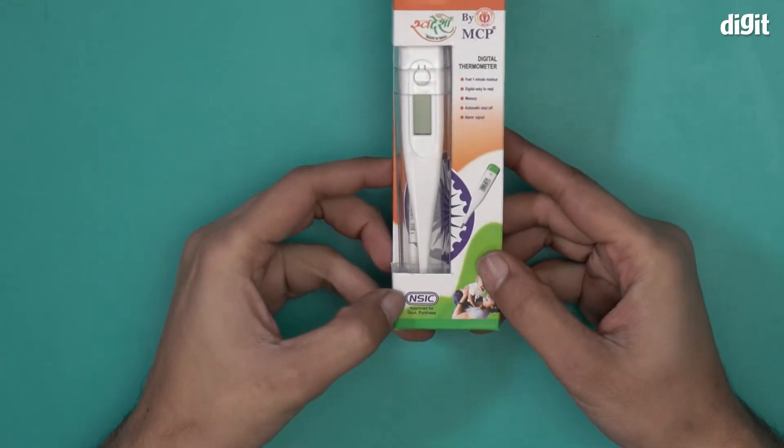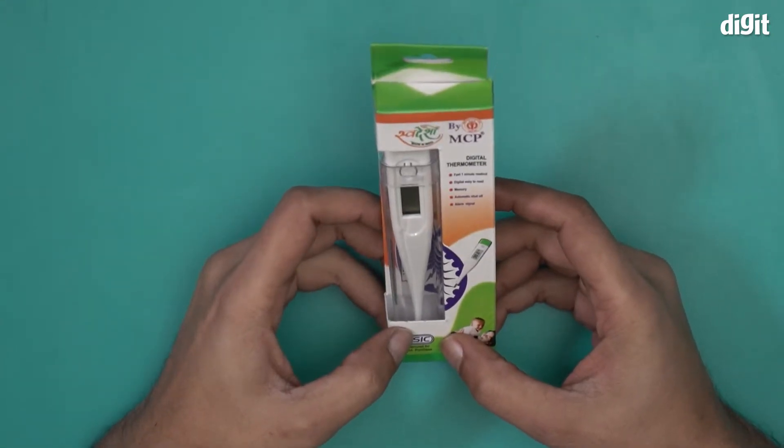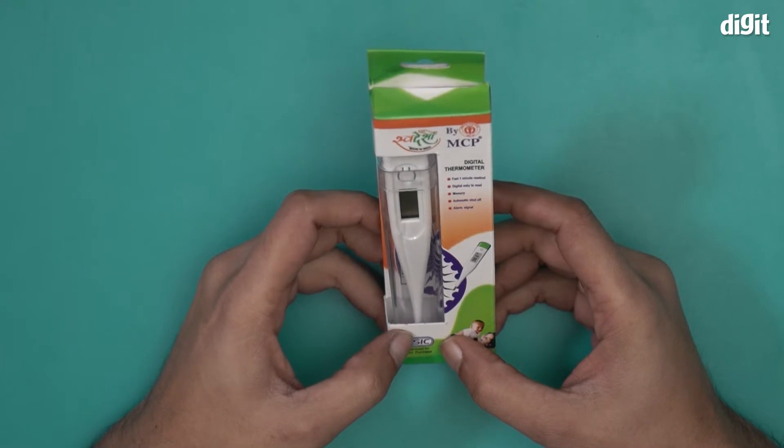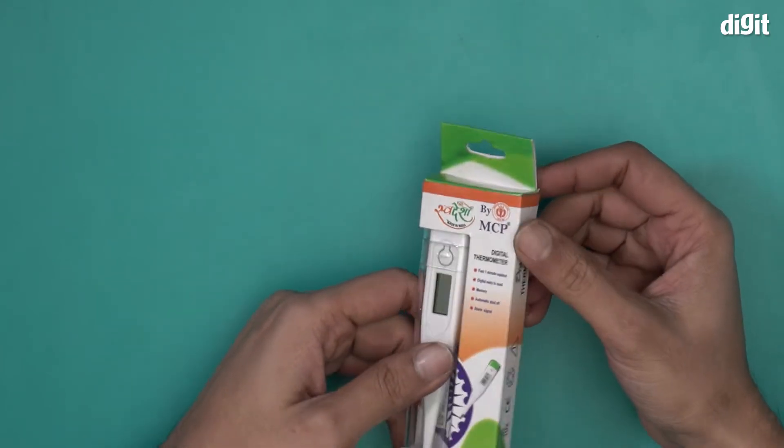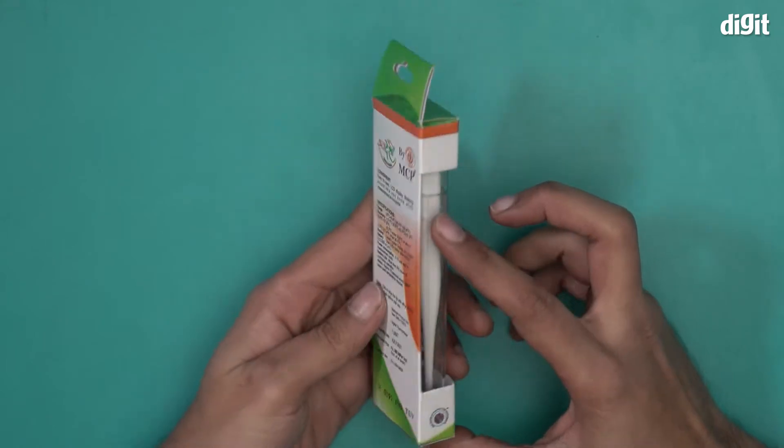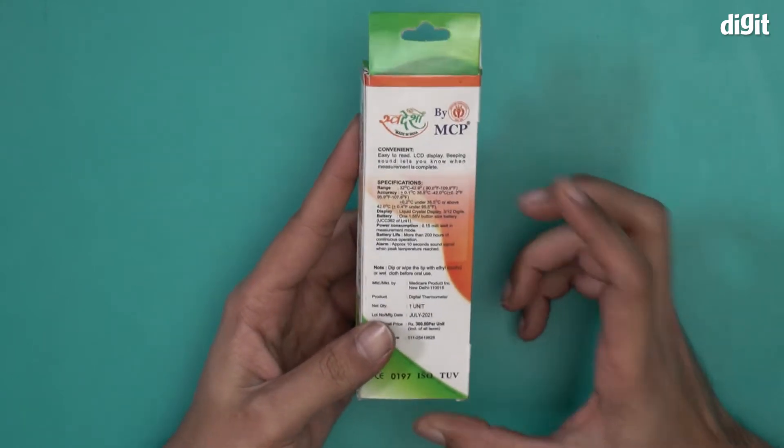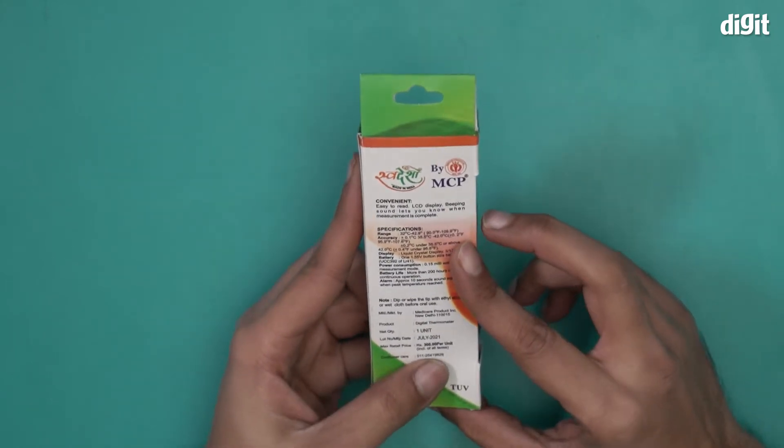This is approved by NSIC for government purchase and this is also approved by Medicare Products Incorporated. There's a stamp right over here. This is a Fahrenheit thermometer which means that this is used primarily for measuring body temperatures.